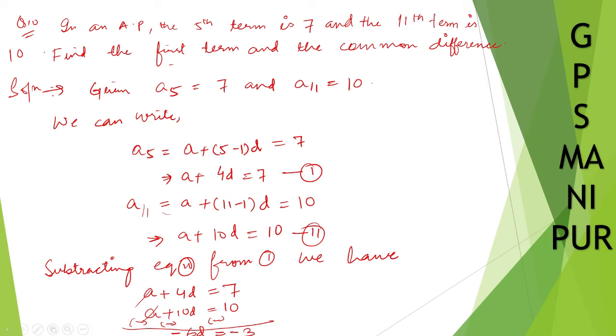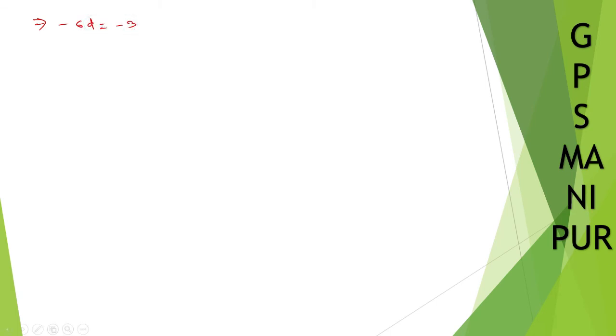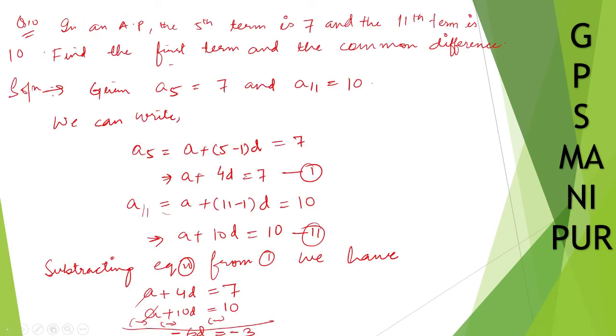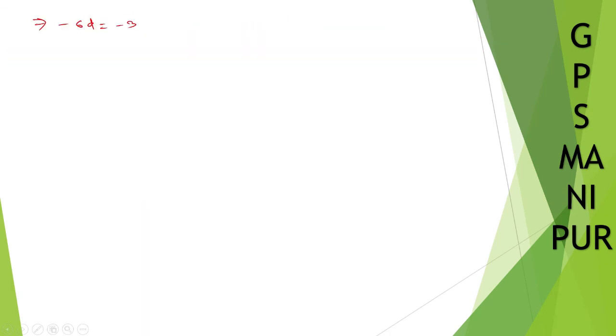So, let me write on the next page. Six d is equal to minus three. Therefore, d is equal to three divided by six, which is equal to one divided by two.